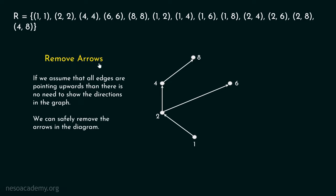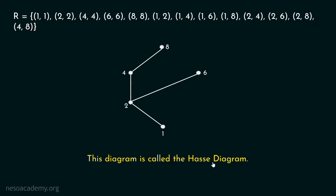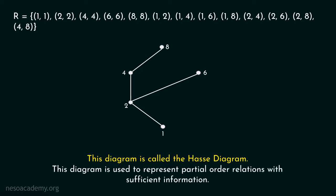My suggestion is to remove arrows as well, because if we assume all edges are pointing upwards, there is no need to show directions in the graph. All edges are pointing upwards, so we can safely remove the arrows. This is the simplest possible version of the graph, and this diagram is called the Hess diagram. This diagram is used to represent partial order relations with sufficient information.